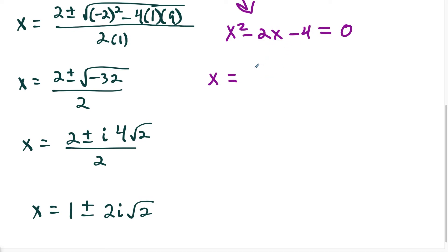And negative b is going to be positive 2 plus or minus the square root of, and then we have negative 2 squared minus 4 times 1 times negative 4, all divided by 2 times a, and the coefficient of our x squared term is 1.